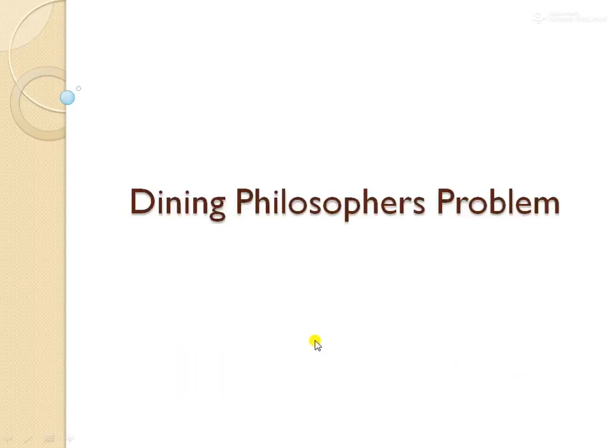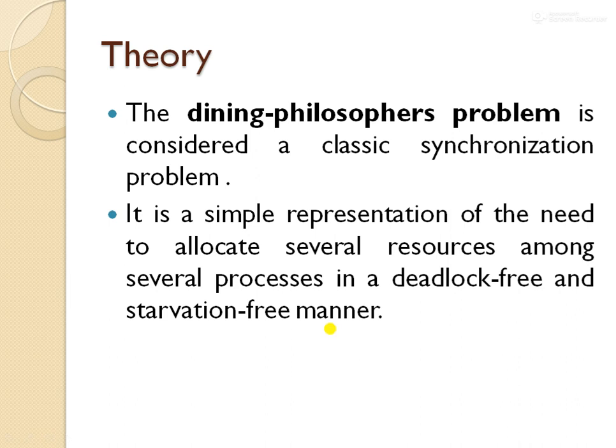Today we will see another classical synchronization problem: the Dining Philosopher's problem. It is one of the important synchronization problems, similar to the producer-consumer problem. We can consider this problem as a simple representation of several processes, each requesting resources, and we need to allocate resources such that deadlock never occurs and none of the processes stop.